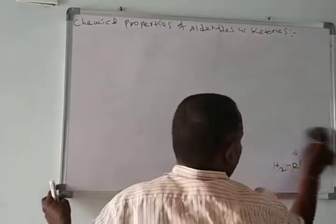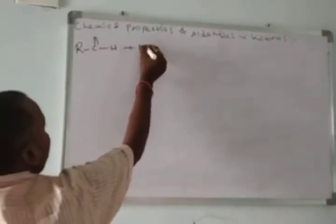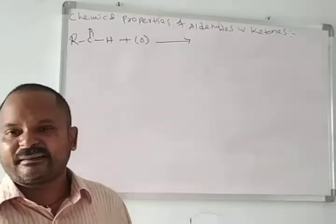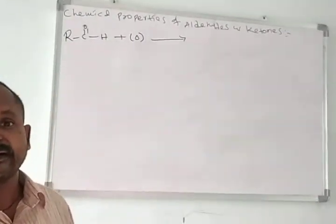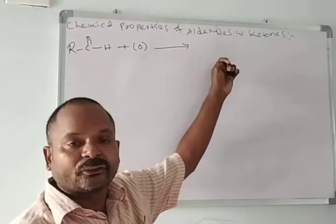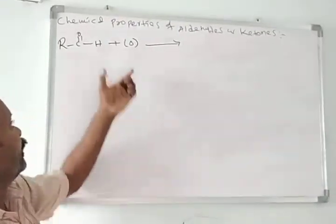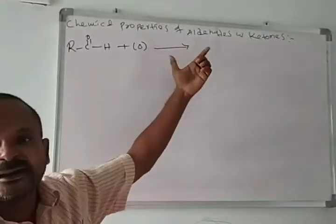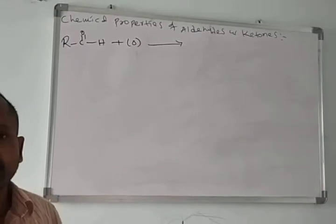In continuation, we will see oxidation. Oxidation of carbonyl compounds gives carboxylic acids. In the presence of strong oxidizing agents like potassium permanganate (KMnO₄), potassium dichromate (K₂Cr₂O₇), chromium trioxide (CrO₃), or mild oxidizing agents like Tollens reagent and sodium hypochlorite (iodoform reaction) — aldehydes and ketones convert into carboxylic acids.